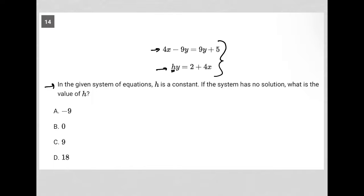In the given system of equations, h is a constant. If the system has no solution, what is the value of h? Well, in order for a system to have no solution, two things must happen. And really, the first thing is the main thing. The second thing is kind of a verification of the fact that it has no solution. So the first thing that we have to make sure happens here is that both x and y cancel out simultaneously.